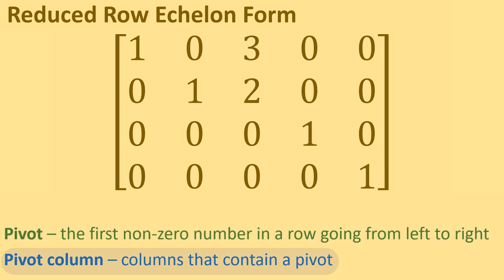Our pivot columns are the columns that contain the pivots. So column 1, column 2, column 4, and column 5 are the pivot columns of this matrix. These are the pivots and pivot columns of a matrix in reduced row echelon form.